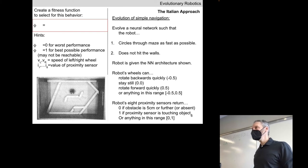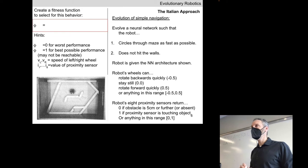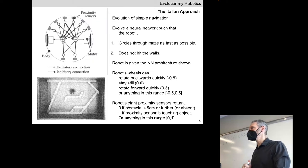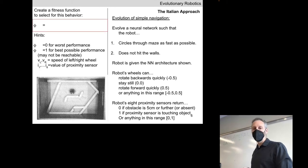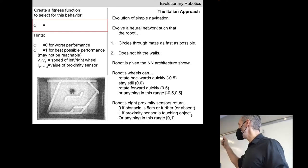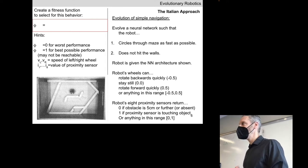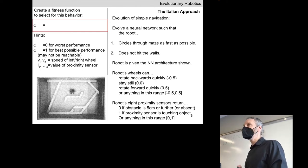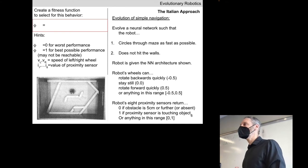Now we need a fitness function that assigns a single number to each neural network — each set of synaptic magnitudes — that we drop into the Khepera and let it drive around on the table. At the end, we get back one value. We'll represent this fitness function with phi, ranging between zero and one: zero is the worst possible behavior, one is exactly what we want.